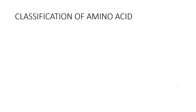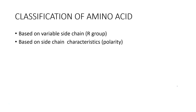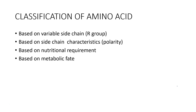Coming on to the classification of amino acids, they can be classified on four main characteristics: based on the variable R group, based on polarity, based on nutritional requirement, and based on metabolic fate.